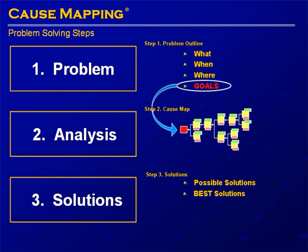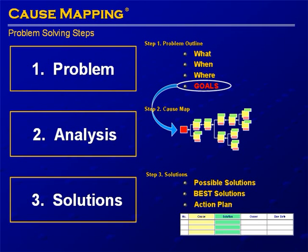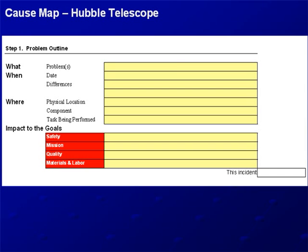From there, you can pick the best ones — the ones that are the most effective — and those would go into an action plan with a specific owner, a due date, and the cause that it controls. Here's how this looks for the Hubble. In step one, we write the problem outline. When we're really defining an issue, we ask people what the problem is.